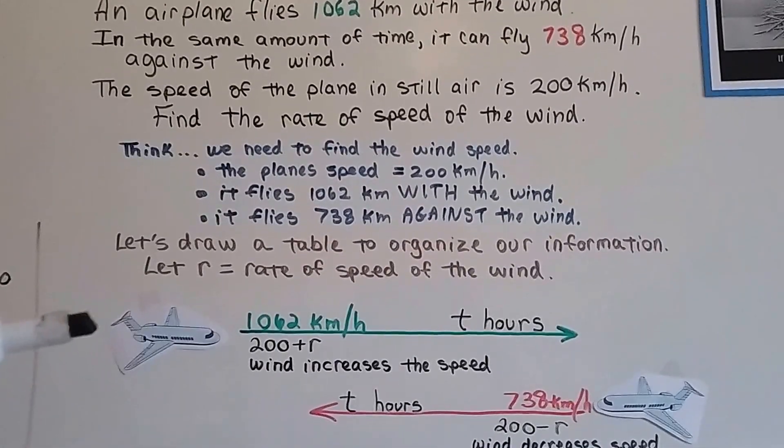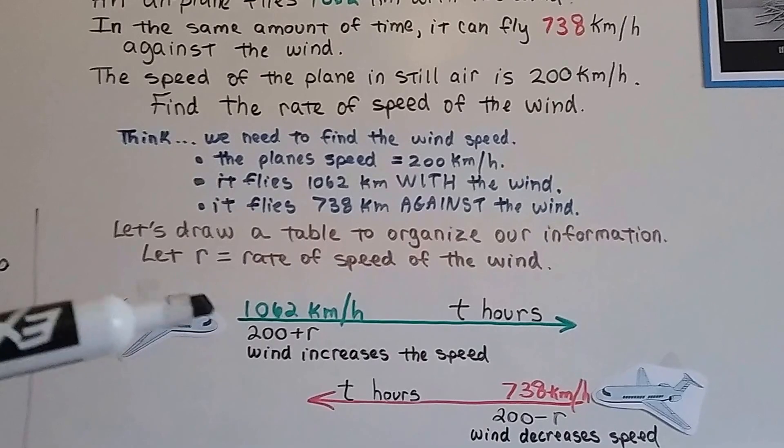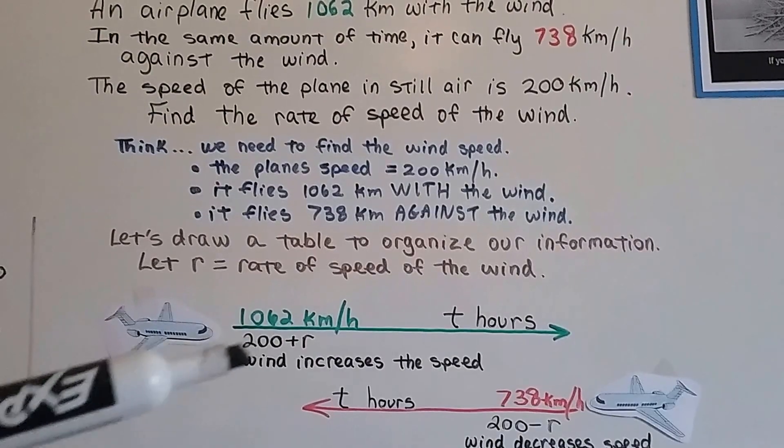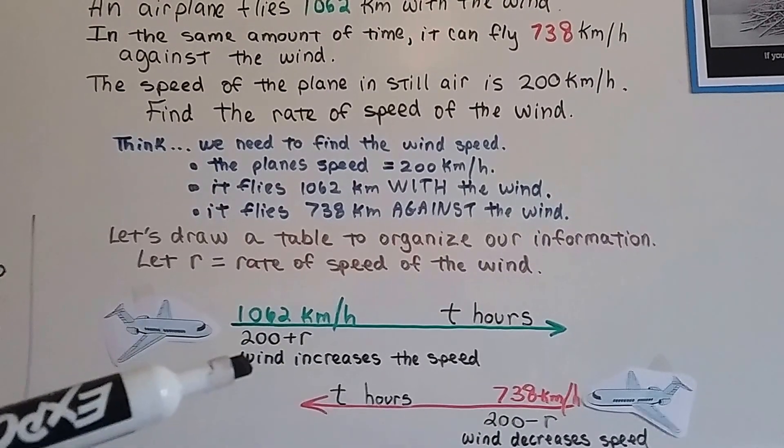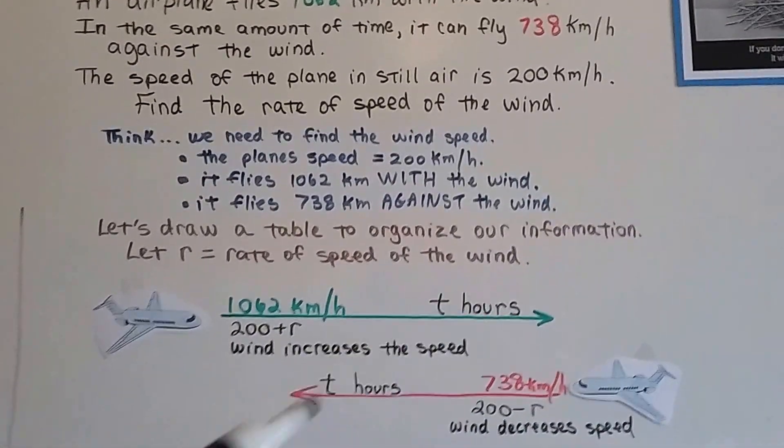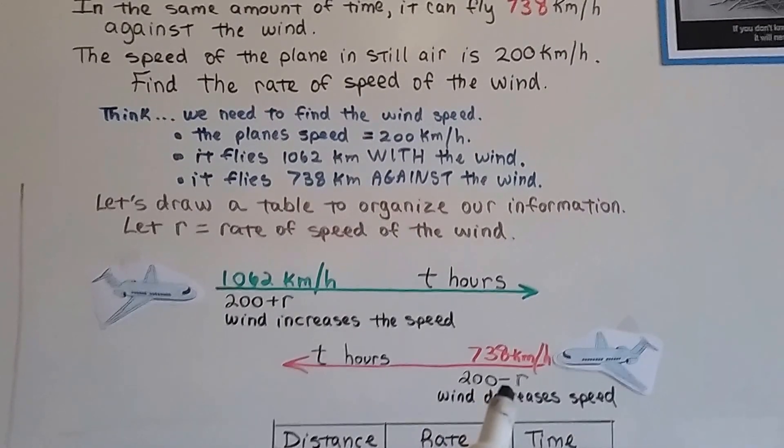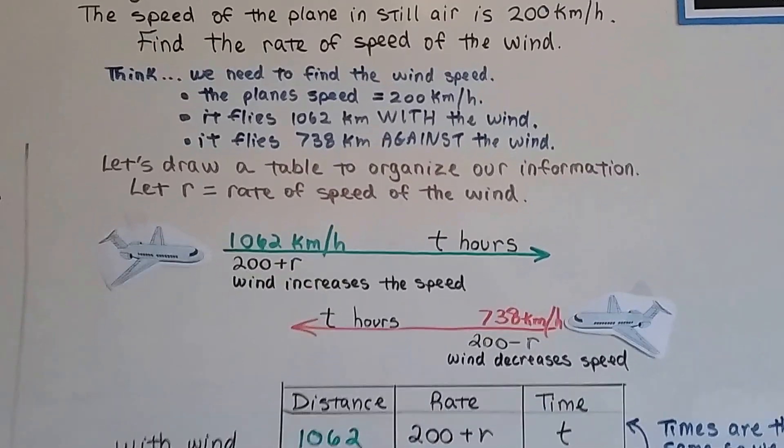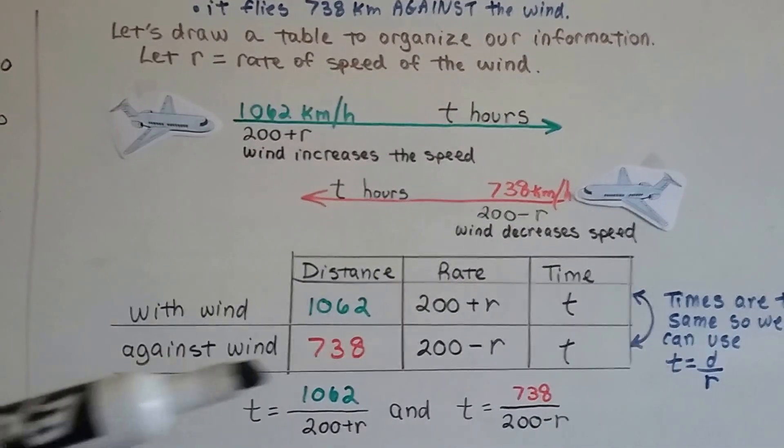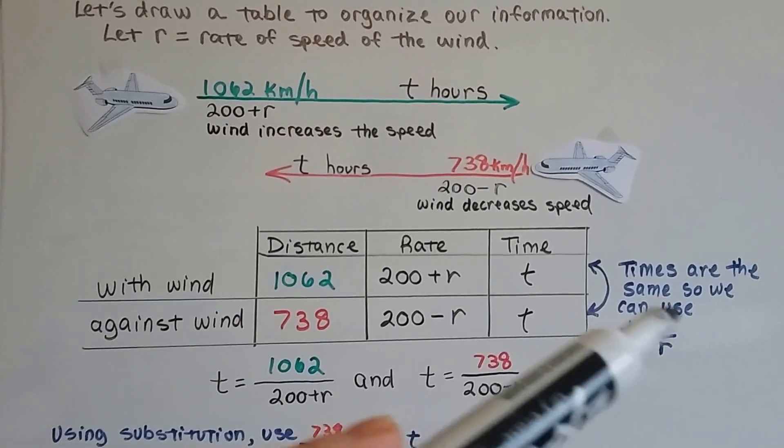So here's the plane. With the wind, the speed increases. So it went 1,062 kilometers. So we have 200 plus r because it's going with the wind. So we plus the r in t hours. Now remember, it's the same amount of time. So it's both going to be t hours. The wind is going to decrease the speed when it goes against the wind. So against it is minus r. So let's make a table here. We've got with the wind, our distance, rate, and time. And against the wind, our distance, rate, and time. And the times are the same, so we can use time equals distance over rate.